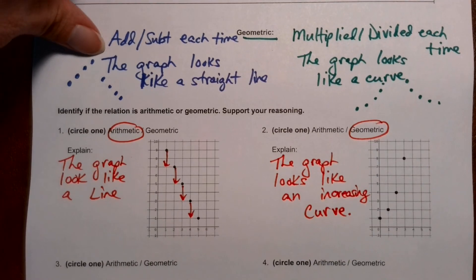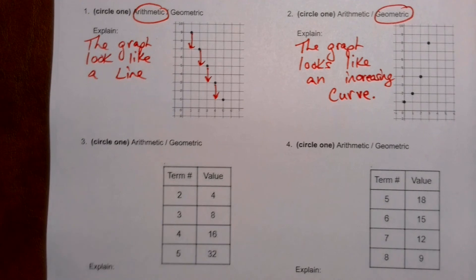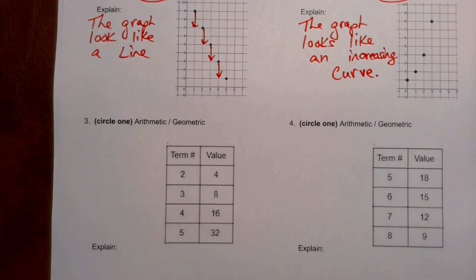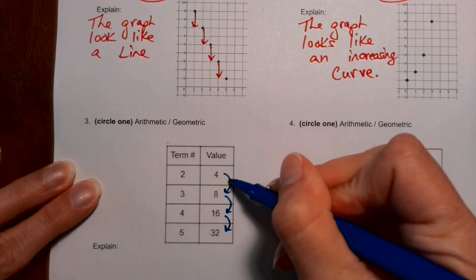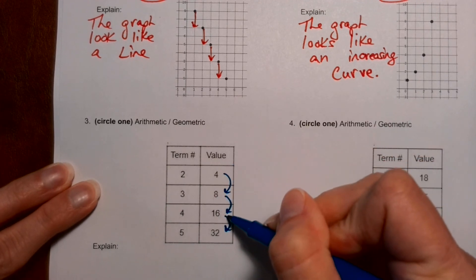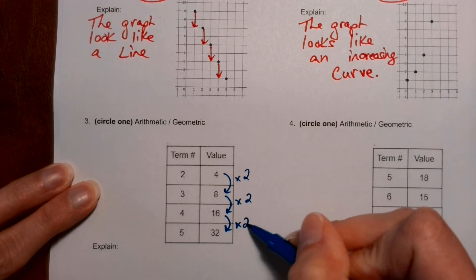All right, we could also take a look at charts and determine arithmetic or geometric. Okay, so when you have a table, you're going to look at the y values to see what's happening. And this is the kind of thing that you do. Four becomes eight. Eight becomes 16. This looks like a multiply by two pattern.